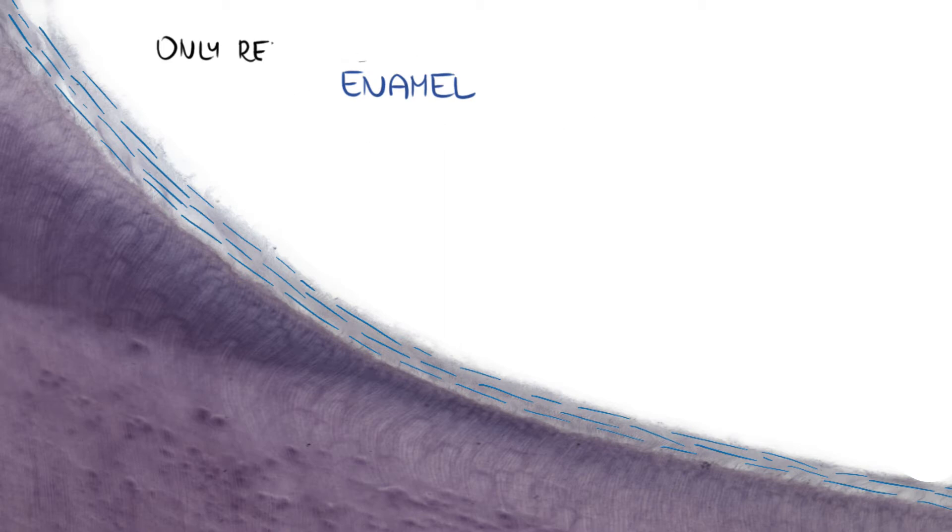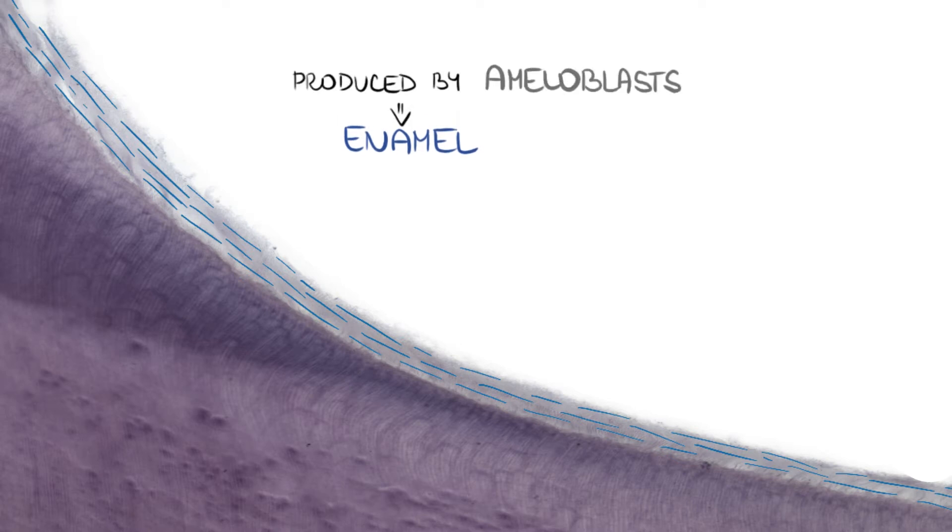Organic matter of enamel is produced by ameloblasts, which are present only during tooth development. They cannot be found in a fully grown tooth, and we will demonstrate them in another video which will refer to tooth development.